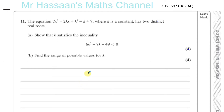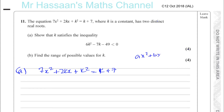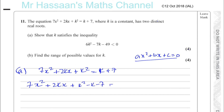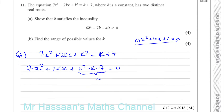If it has two distinct roots, there should be two solutions to this equation. Let's take 7x² + 2kx + k² = k + 7 and rearrange it so everything is on one side. Since k is a constant, we can put it in the form ax² + bx + c = 0, giving us: 7x² + 2kx + (k² - k - 7) = 0.